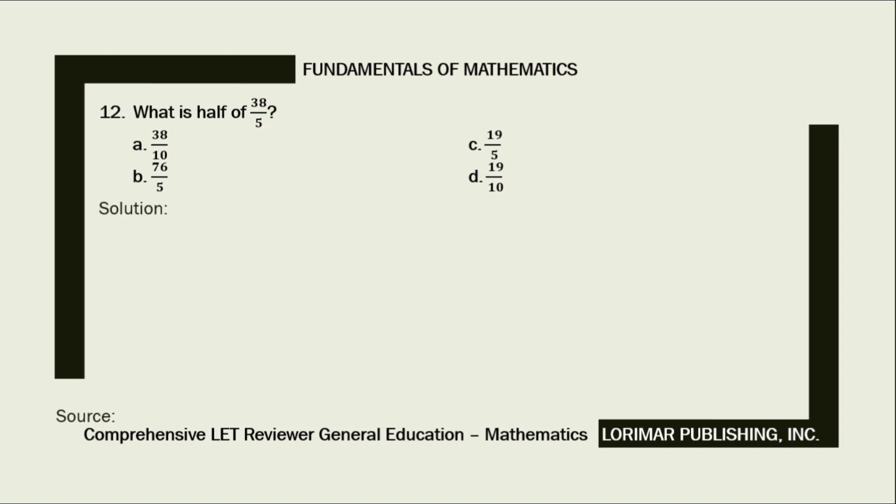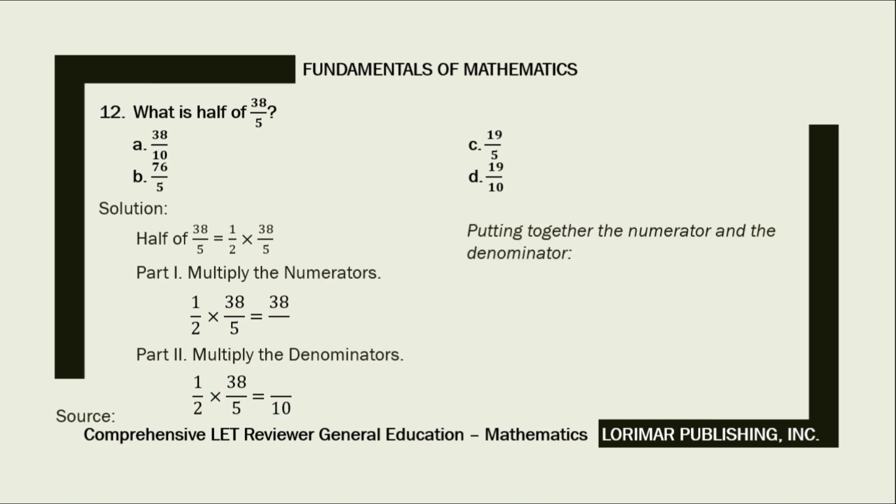Here is our solution. Half of 38/5 means 1/2 times 38/5. First, multiply the numerators. 1 times 38 equals 38. Next, multiply the denominators. 2 times 5 equals 10. Next, putting together our numerator and denominator, our answer becomes 38/10.